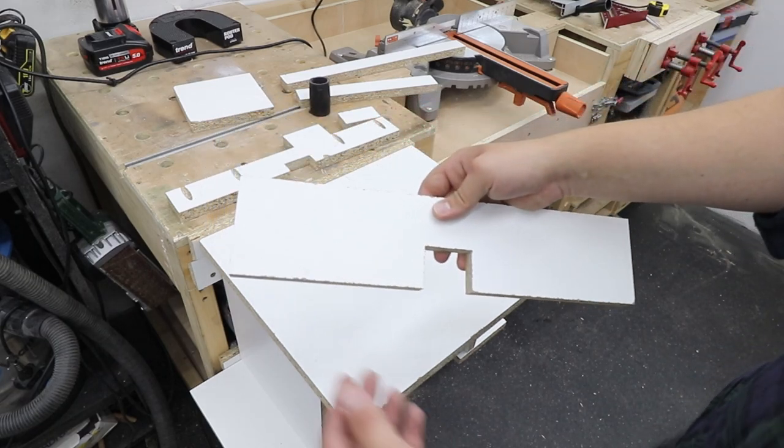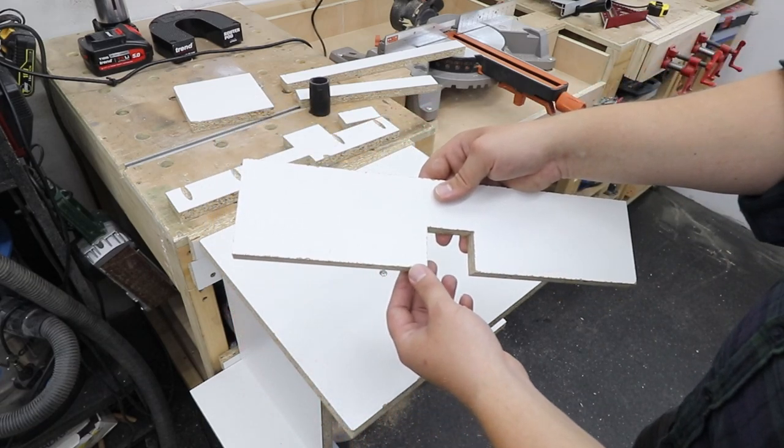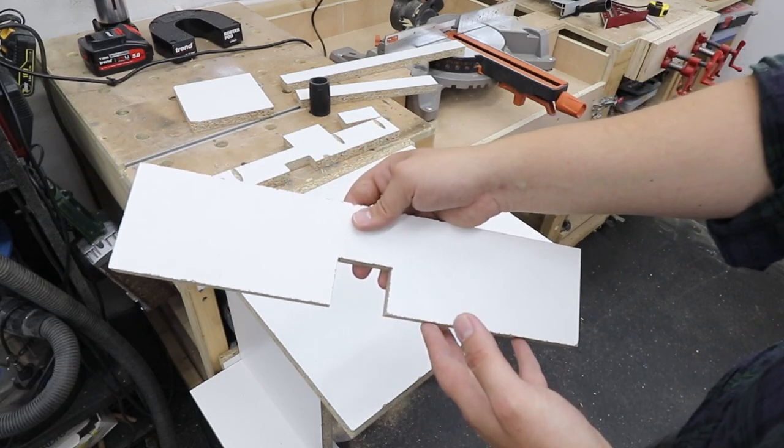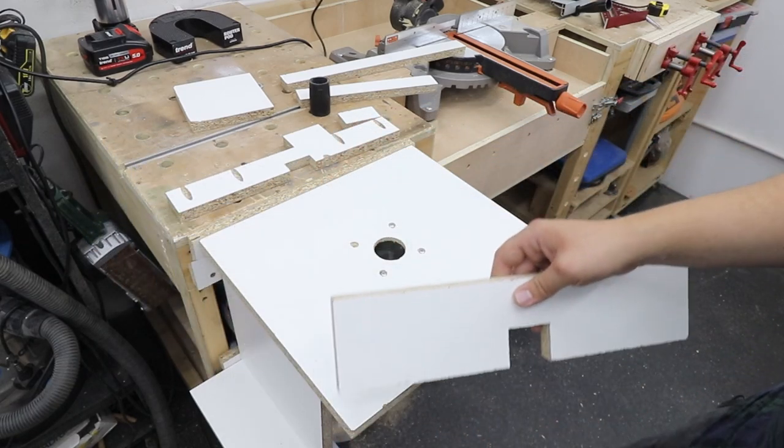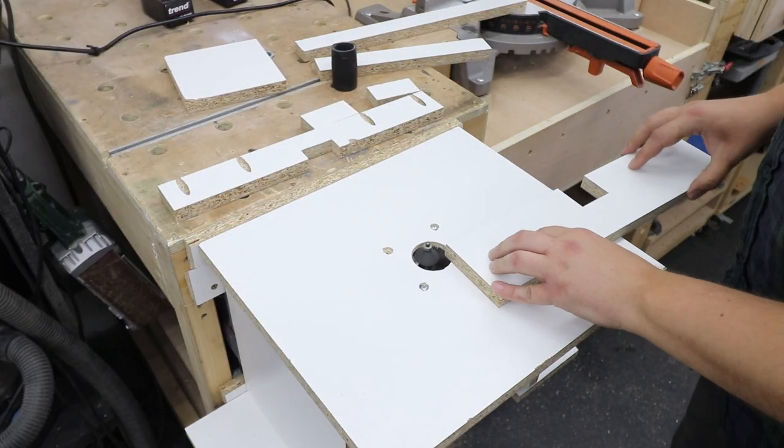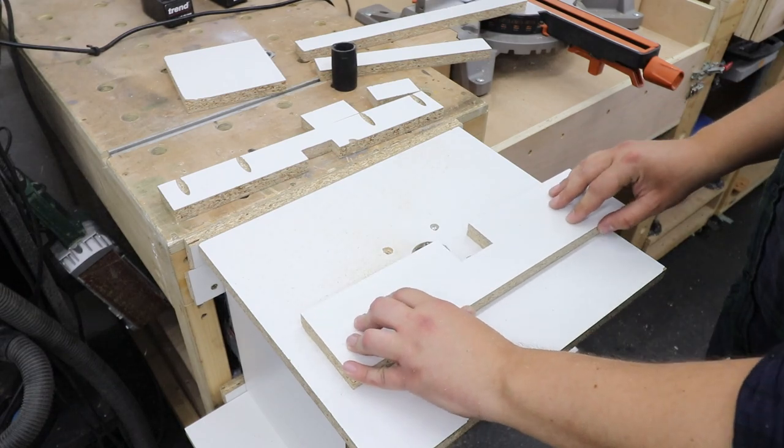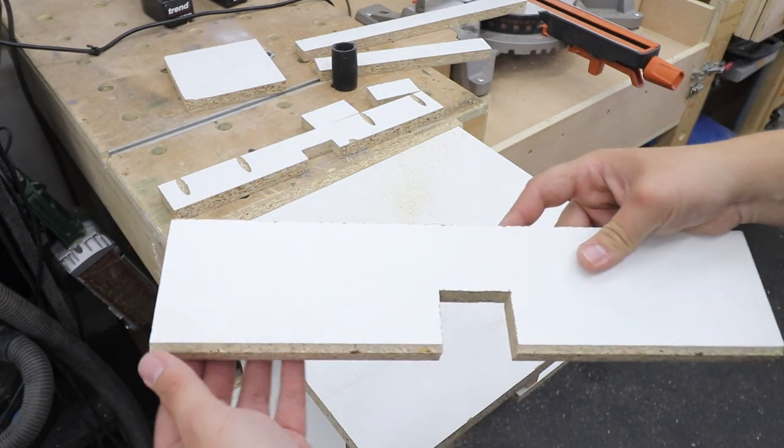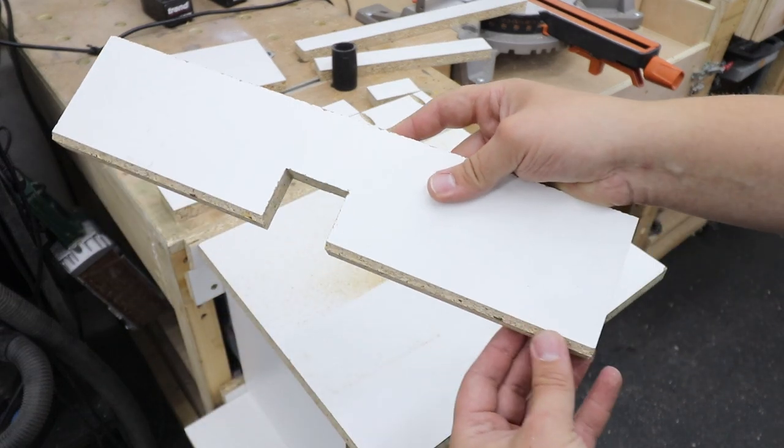Before we put the fence together, I want to use a chamfer bit to add a chamfer to the bottom of our fence so the dust will basically not get in the way and it's not going to cause us any issues. There we go, chamfer sorted.